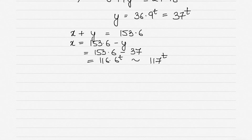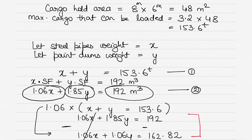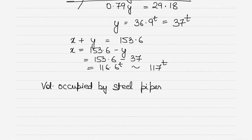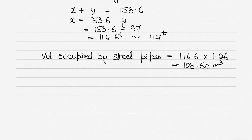Now I need to find up to what height the steel pipes can be loaded. Since I know the weight of steel pipes is 116.6 tons, I can find the volume they occupy. Mass multiplied by stowage factor gives volume. Volume occupied by steel pipes = 116.6 × 1.06 = 123.60 cubic meters.